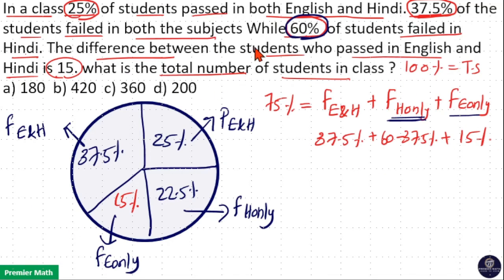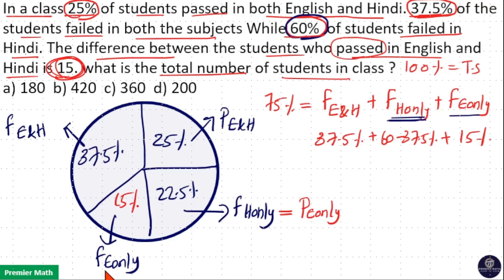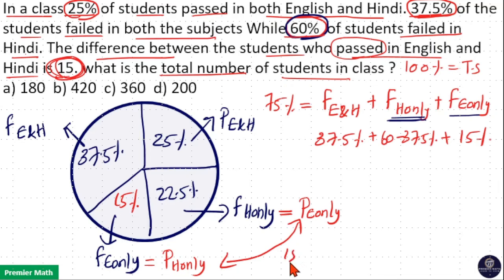The question says the difference between students who passed in English and students who passed in Hindi is 15. Now, students who failed in Hindi only equals students who passed in English only. Similarly, students who failed in English only equals students who passed in Hindi only. The difference between these two is 15, so 22.5% minus 15% equals 7.5%, meaning 7.5% equals 15.